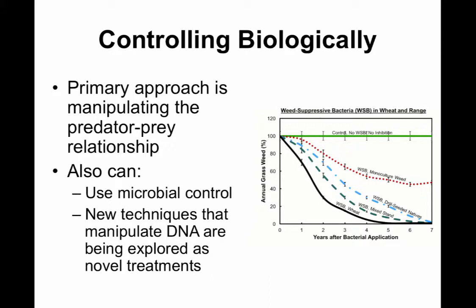Controlling biologically — the primary classical approach — is really to manipulate the predator-prey relationship. With leafy spurge and flea beetles, we get enough flea beetles out at sufficient levels so their larvae feed on the root systems of leafy spurge, making it less competitive. This basically changes that predator-prey relationship.